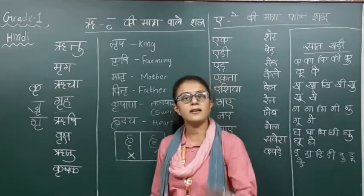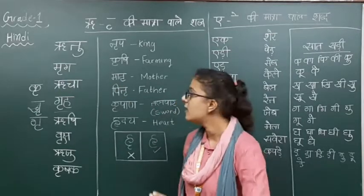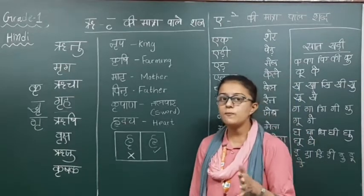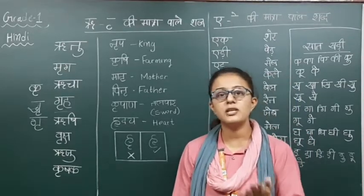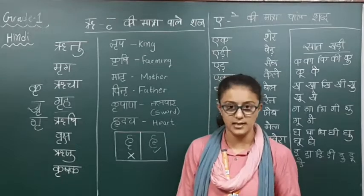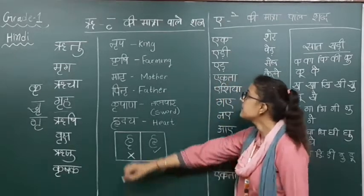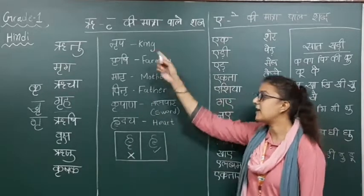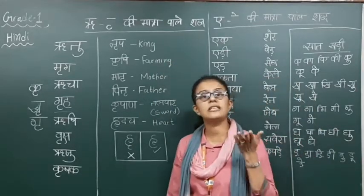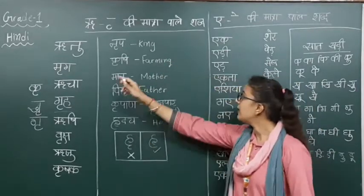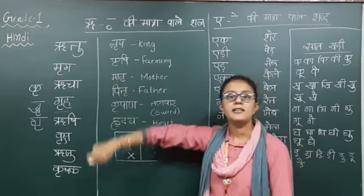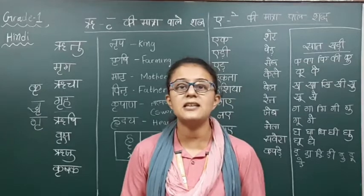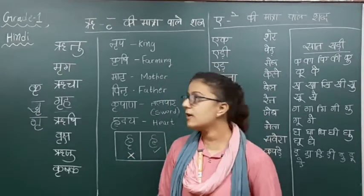Now these words are written in your Hindi textbook also. Yahaan par jo kuch shabd diye gaye hai, woh aapki notebook mein, Hindi textbook mein mention nahi kiye gaye hai — ye extra words hai. First extra word is nrp. Nrp kya hai? King — yaani ki maharajah, usse bolti hai nrp. Next is matru — matru kya hai? Mother, usse bolti hai matru. Next is pitru — pitru kya hai? Father, usse bolti hai pitru.